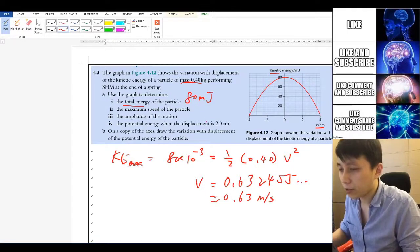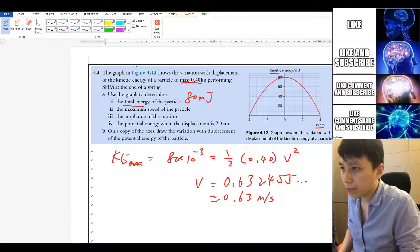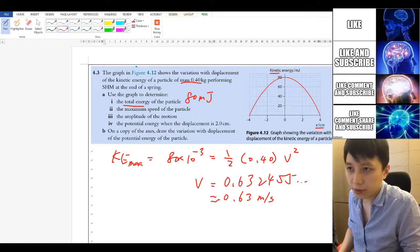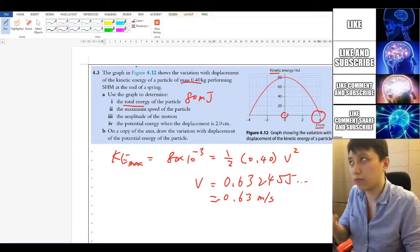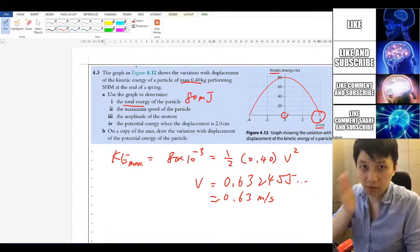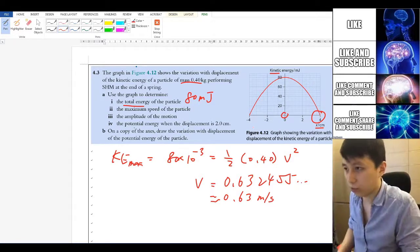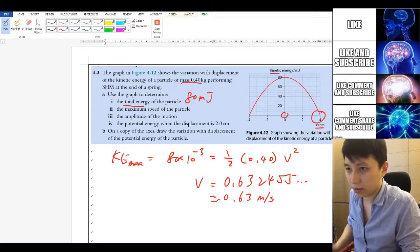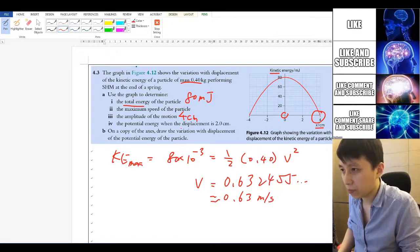Part 3. Amplitude of the motion. Amplitude of the motion, when KE is 0, that means it's not moving. It's not having speed. So that is simply the two sides of your motion. So that's the amplitude. So 4 cm simply. You don't even have to calculate anything.